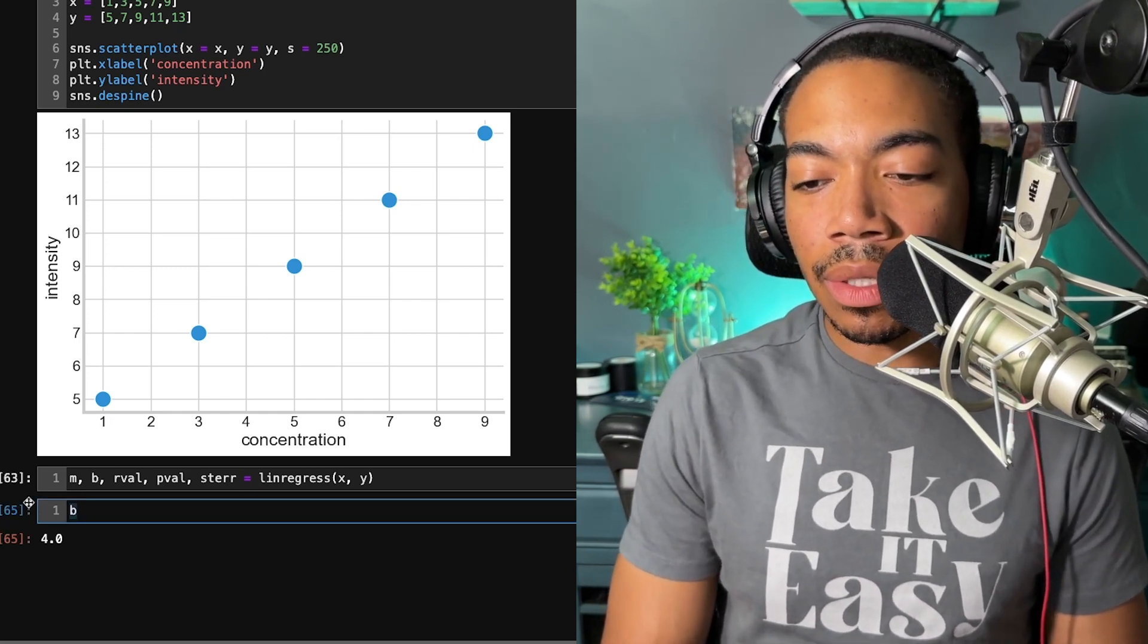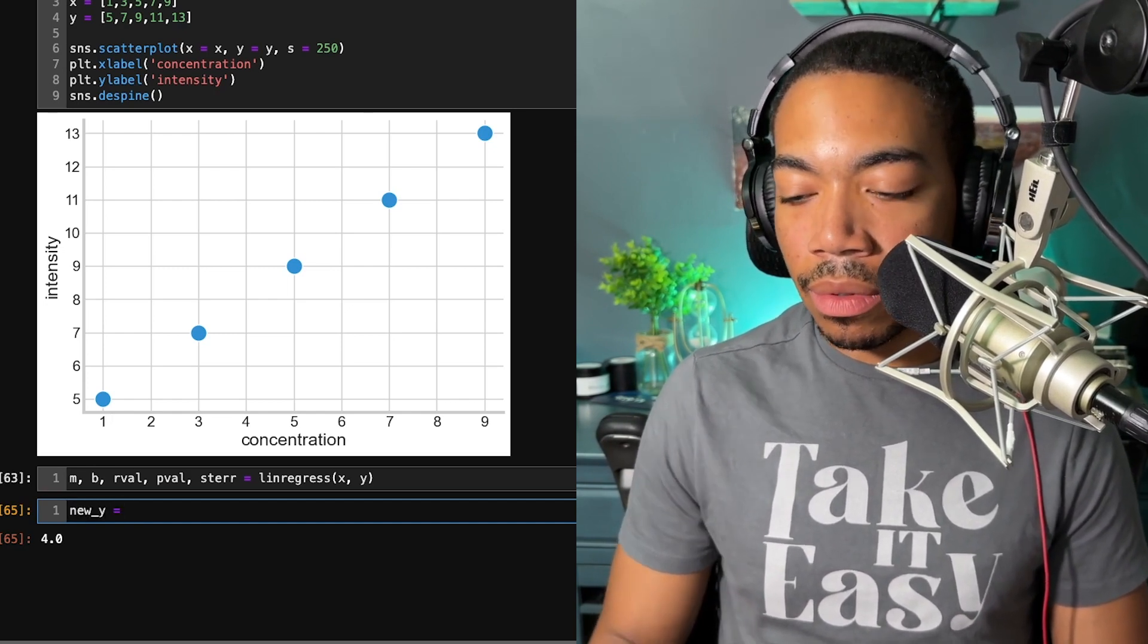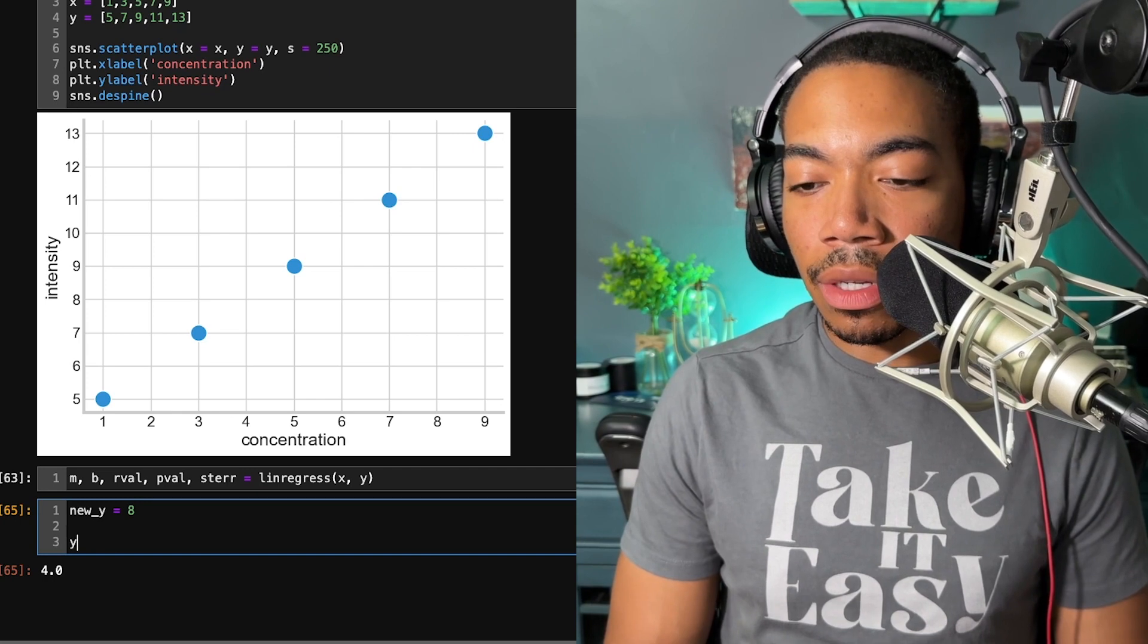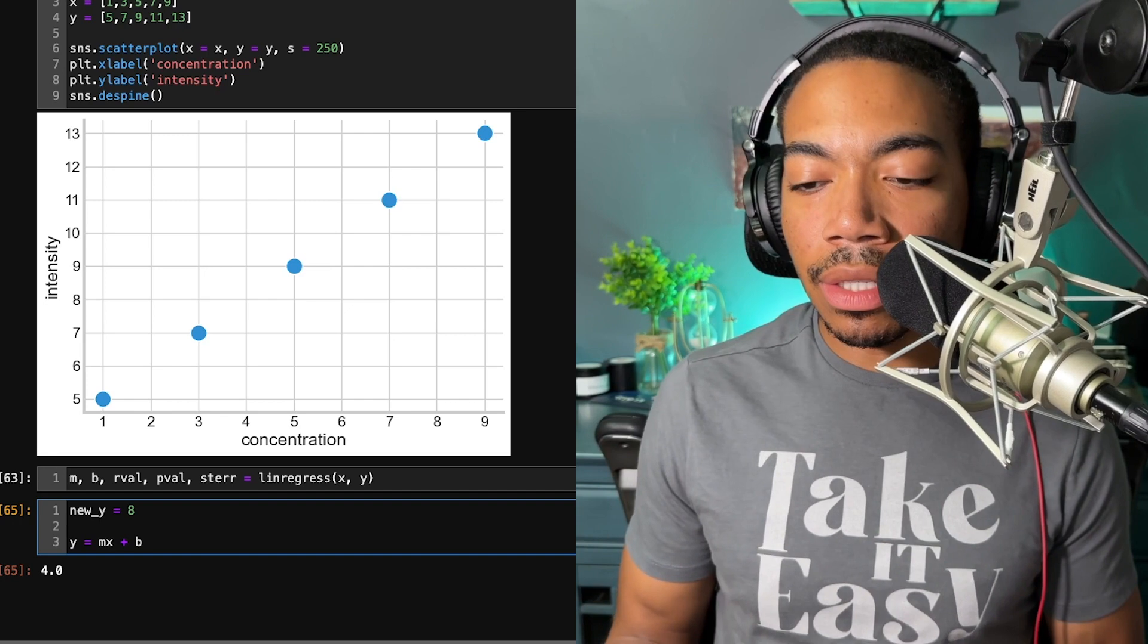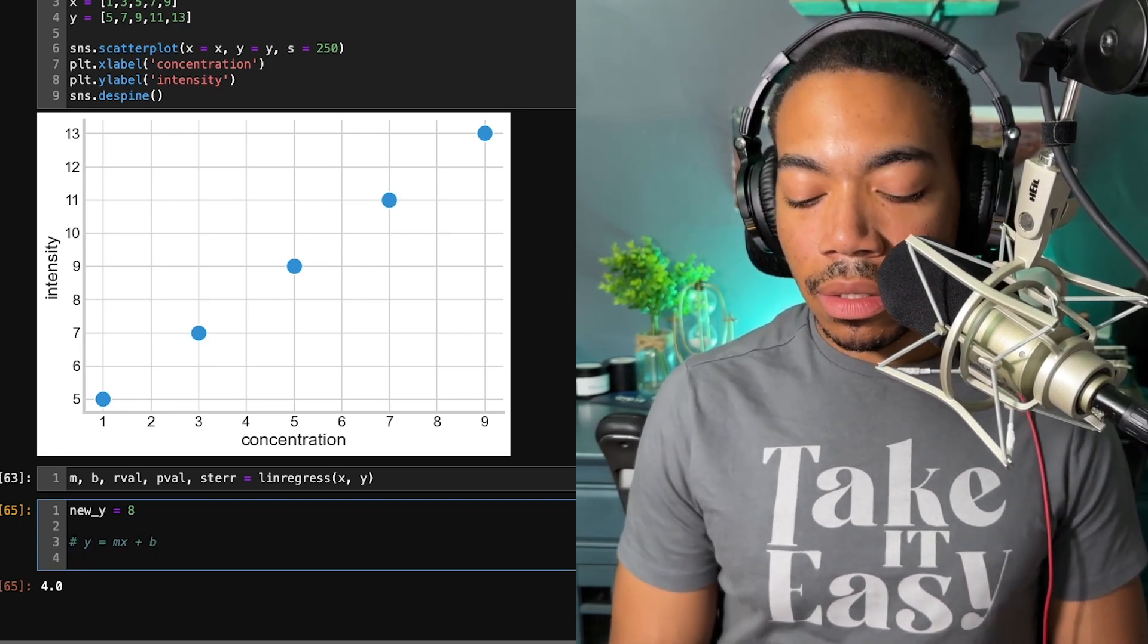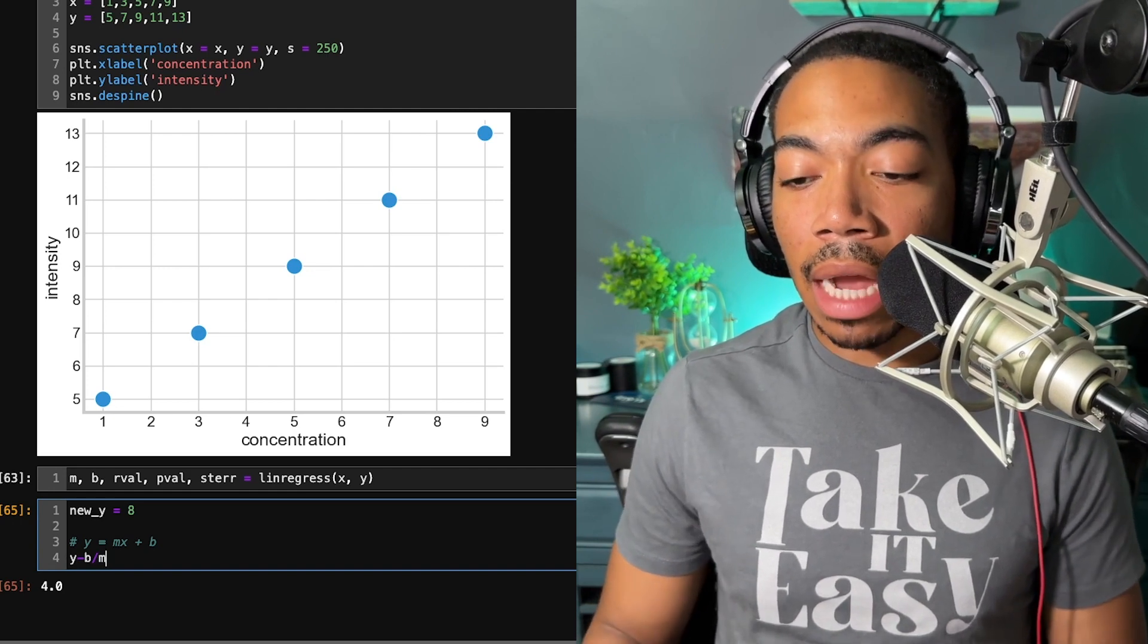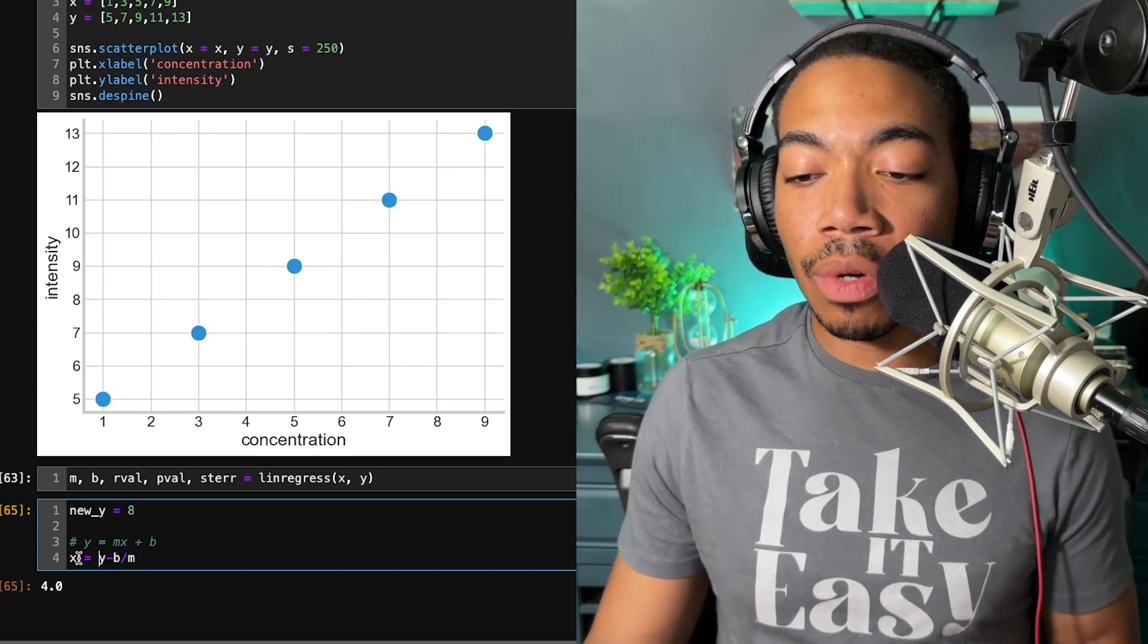To demonstrate what we want to do, let's say we have a new y value that equals 8. And we know that we have our original equation y equals mx plus b, but now we want to rearrange this equation so that we can solve for x. To do this, we will take y minus b and then divide by m. And this becomes our new equation, which equals our x value, the concentration we're trying to predict.